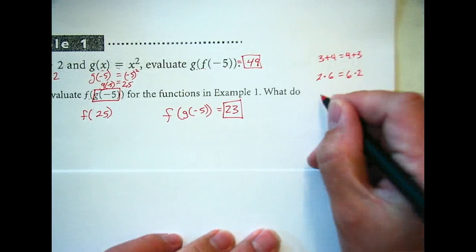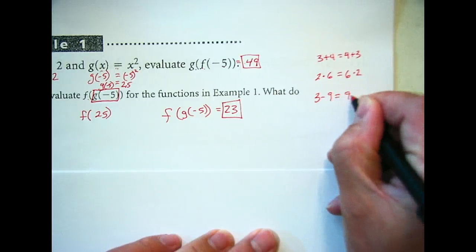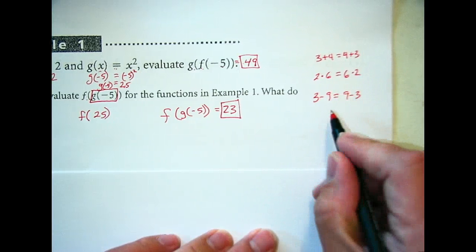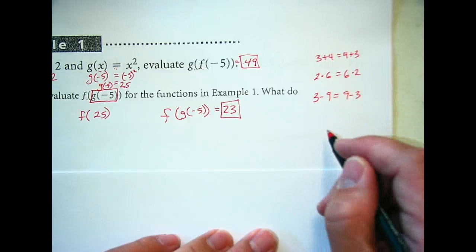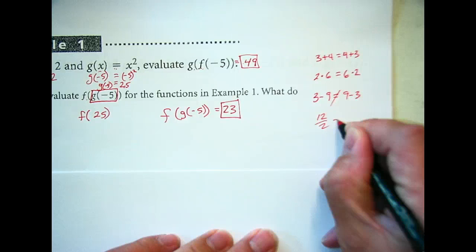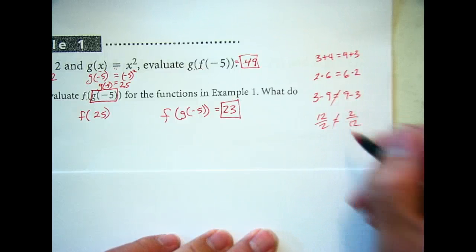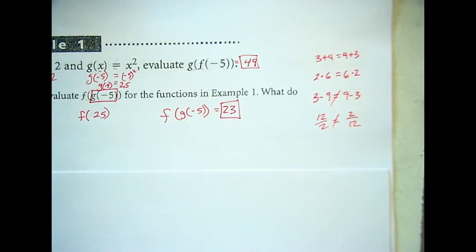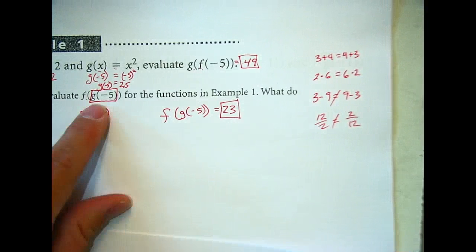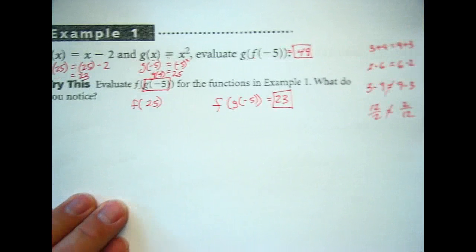Just like subtraction. Is subtraction commutative? Is 3 - 9 equal to 9 - 3? No, they're not equal. Is division commutative? No. Order matters. Not commutative. So make sure we're kind of working from the inside outward. Any questions there?